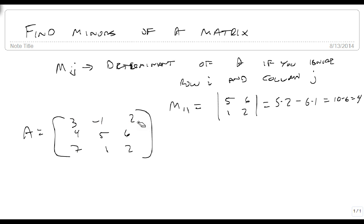Okay, so that's our first one. If I wanted to know what M₂₃ is, give myself a little more room here. That's second row, third column being ignored, and so that tells me I'm going to take the determinant of 3, -1, 7, 1, which is 3 times 1 minus negative 1 times 7, which is 3 plus 7, which is 10.